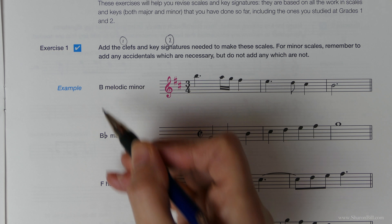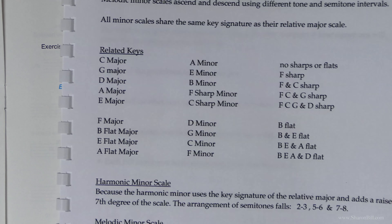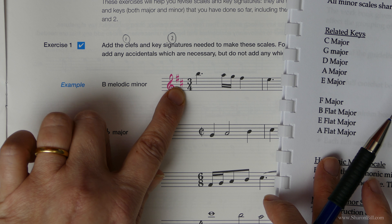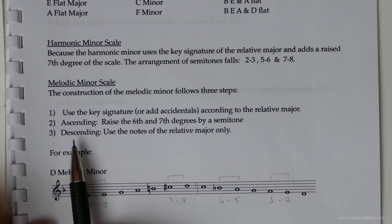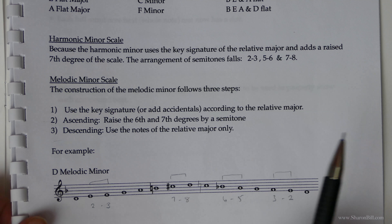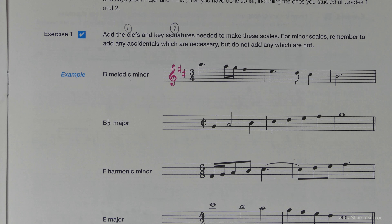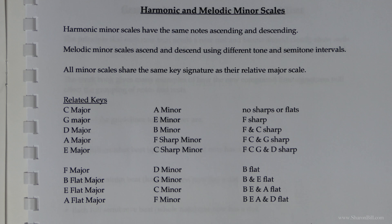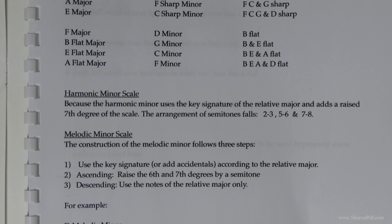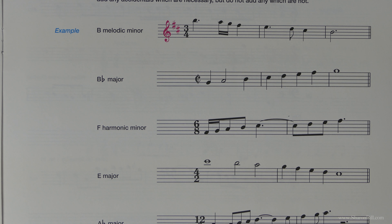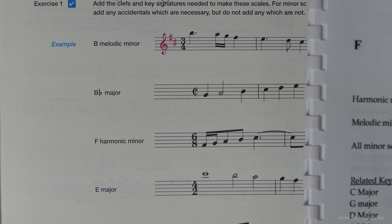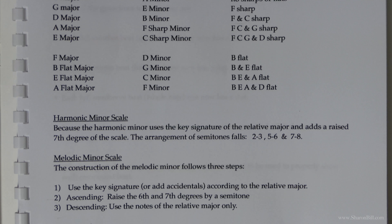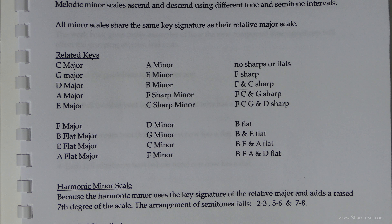They've given us this first example of B melodic minor. You can check that B minor is related to D major, so we need a key signature of two sharps: F sharp and C sharp. The melodic minor form descends using the notes of the relative major only, so there are no extra accidentals there. It may take a little bit of time to work through these exercises as you keep referring back to sheet F and double checking your information. So press pause and work through exercise one at your own pace, and then I shall press on through and double check those answers with you afterwards.